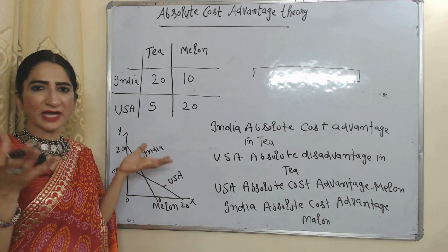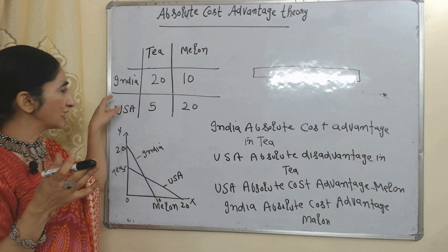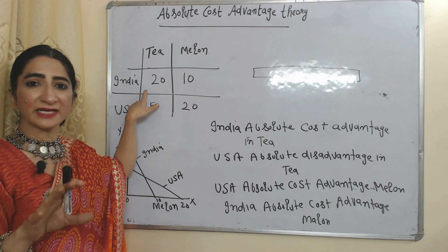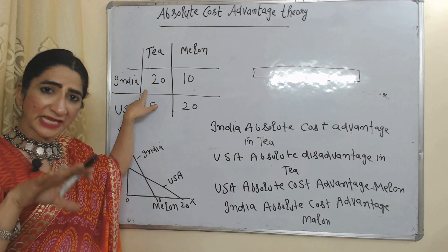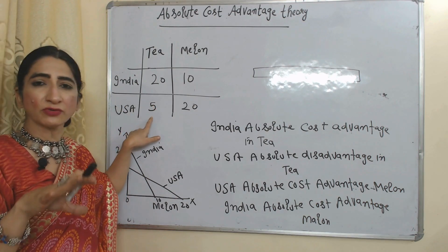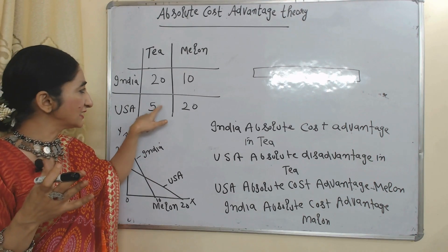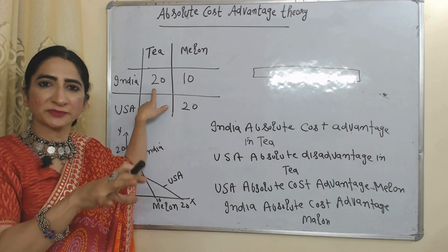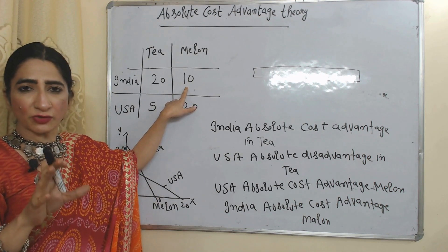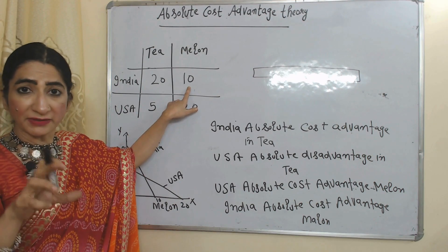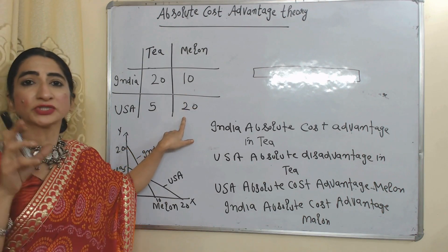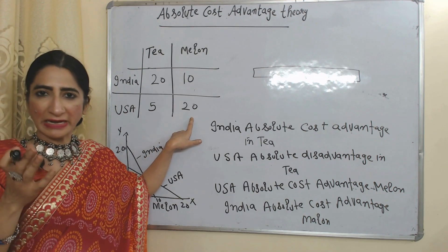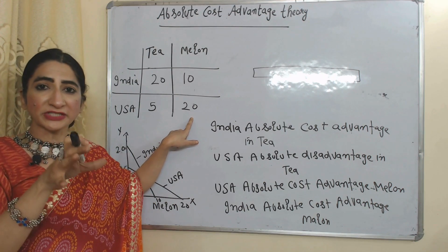Now we understand this theory with the help of an example. We have two countries, India and USA, and they are producing two goods: tea and melon. With eight hours of labor, India can produce 20 units of tea, while with the same eight hours of labor, USA can produce only 5 units of tea. That means India has absolute cost advantage in production of tea, so India should increase production and export of tea. With eight hours of labor, India can produce 10 units of melon, but USA can produce 20 units of melon. That means USA has absolute cost advantage in production of melon, so USA should increase production and export of melon.